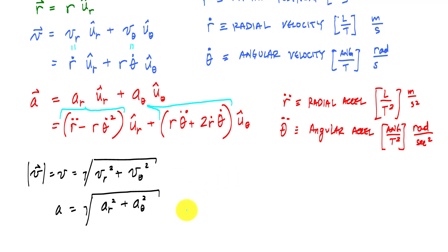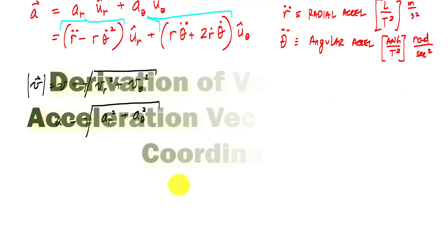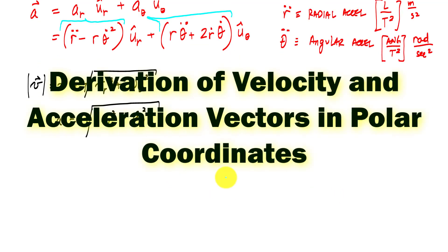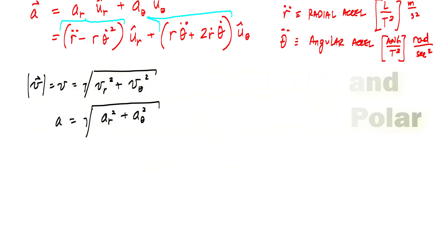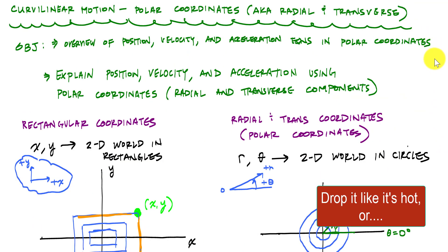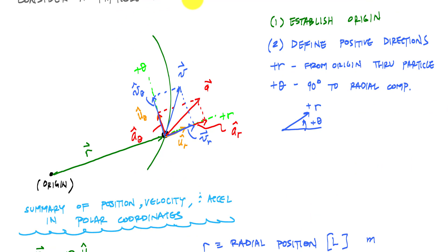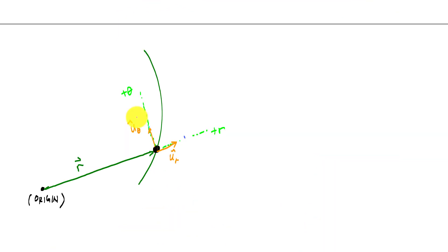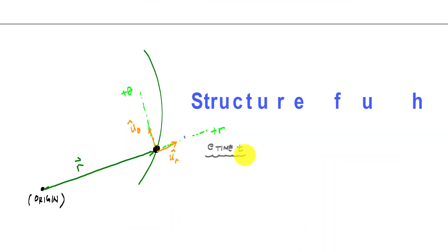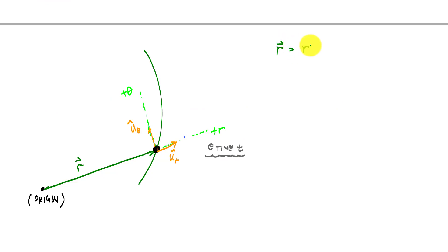Let's talk about how we get the velocity and acceleration vectors and how they're derived. Consider this particle at some location. Here's my particle at some time t. The position vector is defined as r times u_r_hat. And if I want to get the velocity, I just take a time derivative, dr/dt.